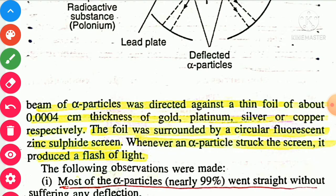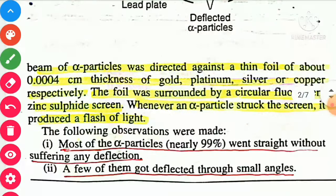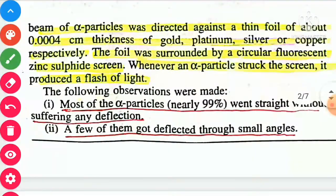Whenever alpha particles struck the screen, they produced a flash of light. The observations of this alpha particle scattering experiment were: First, most of the alpha particles — nearly 99% — passed through without suffering any deflection.